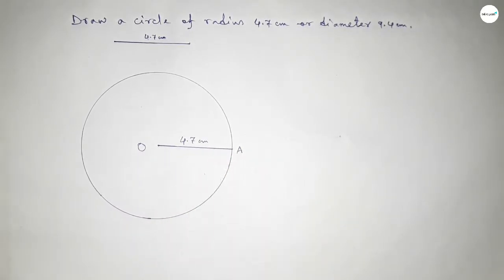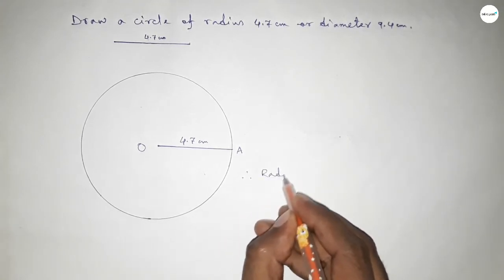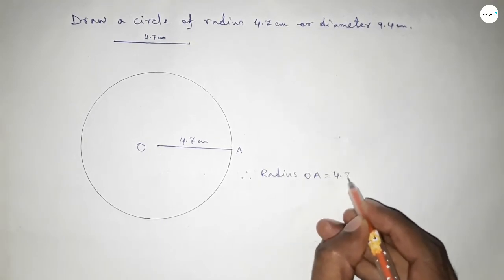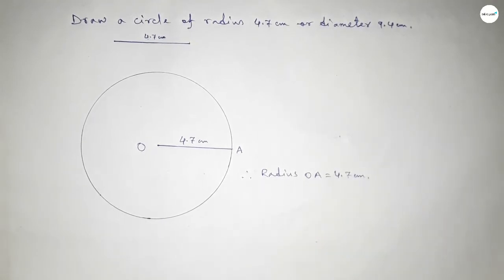Therefore radius OA equal to 4.7 centimeter. That's all, thanks for watching. If this video is helpful to you, then please share it with your friends.